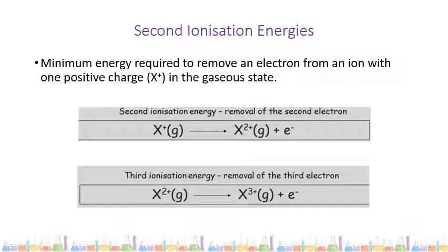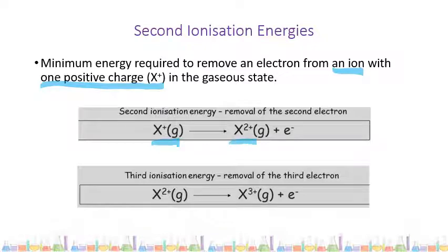Second ionization energies have the same definition with a small change: it's the minimum energy required to remove an electron from an ion with one positive charge in the gaseous state. For third ionization energies, it would be from an ion with two positive charges. So the second ionization energy using X would be removing an electron from X+ — the product of our first ionization energy — to form a 2+ ion.